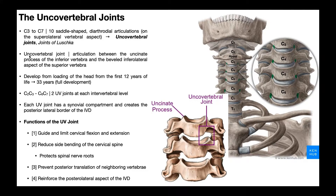The uncovertebral joint is an articulation between the uncinate process of the inferior vertebra and the beveled infralateral aspect of the superior vertebra. It's beveled and infralateral in terms of that superior vertebra — and that's your uncovertebral joint.